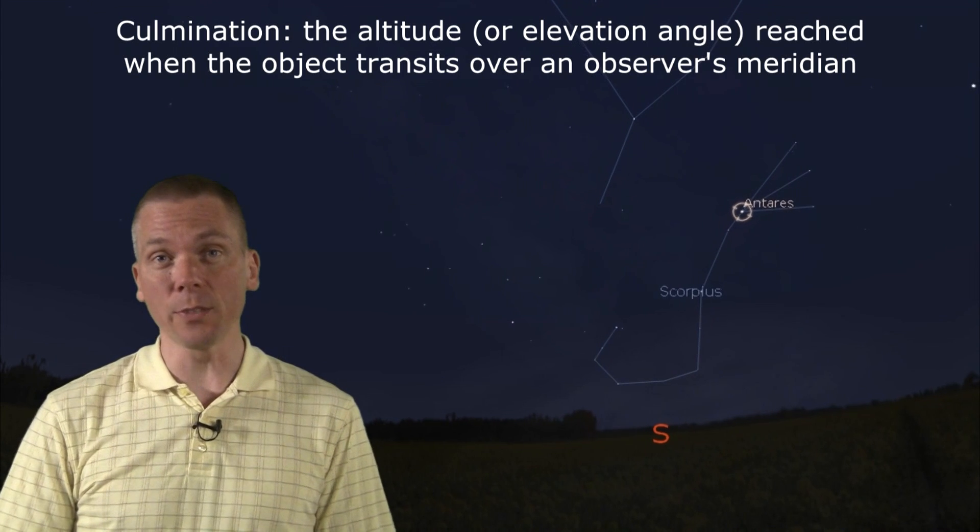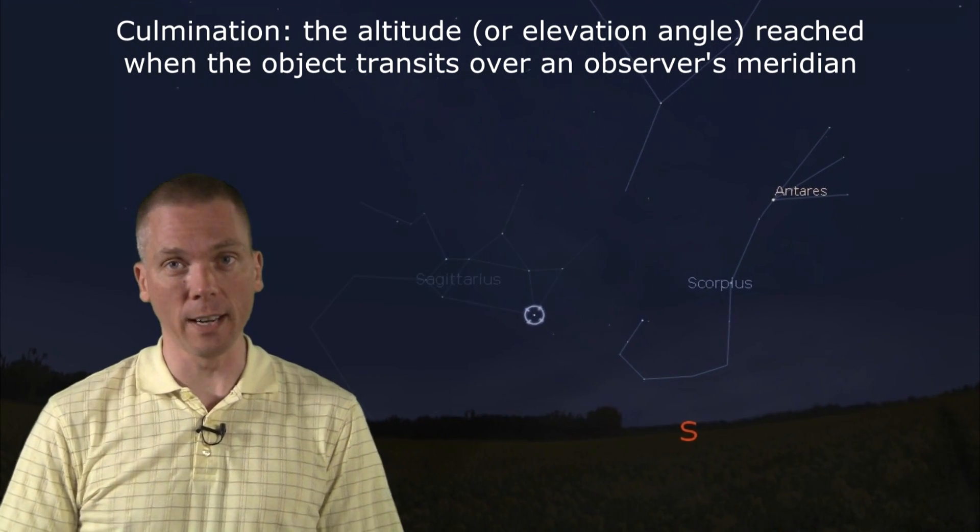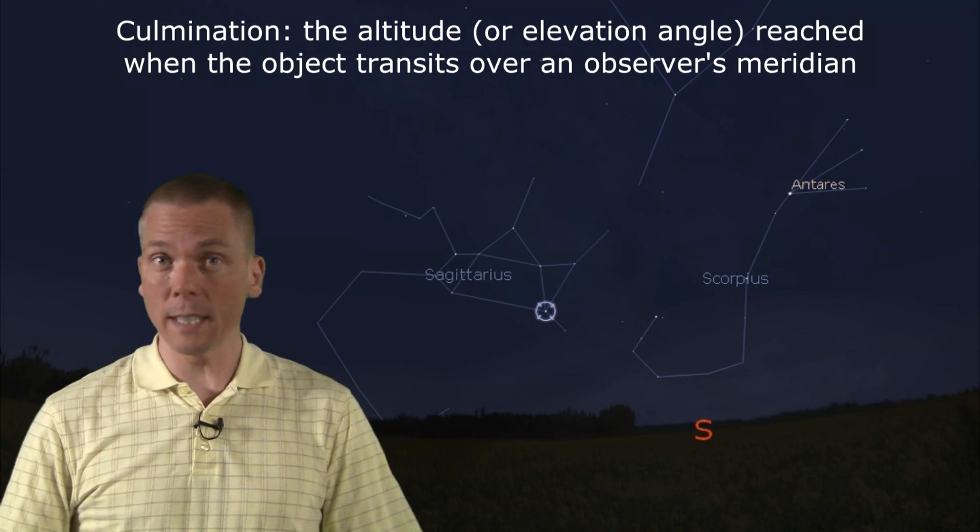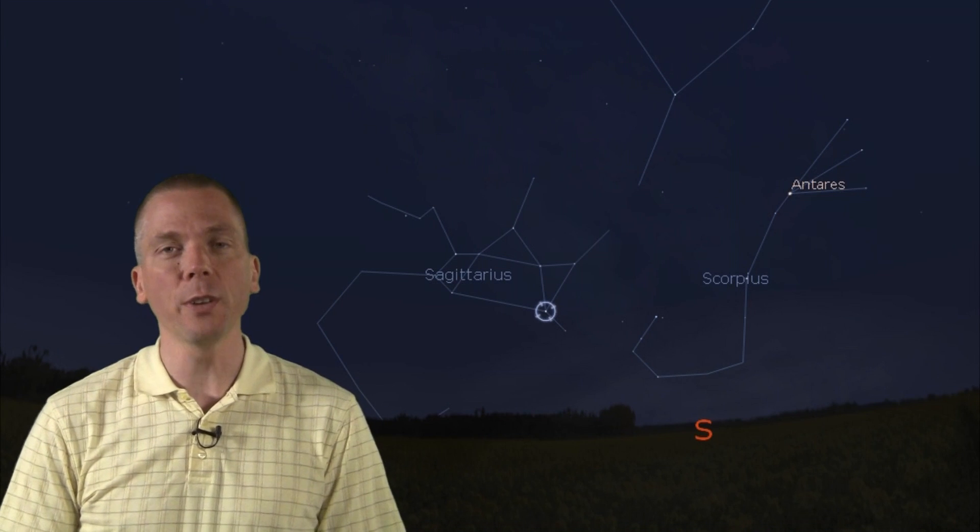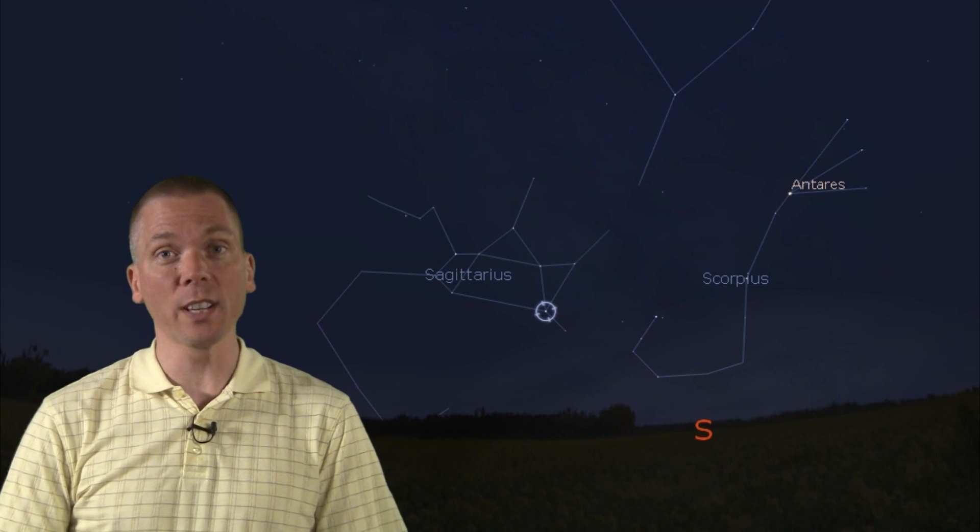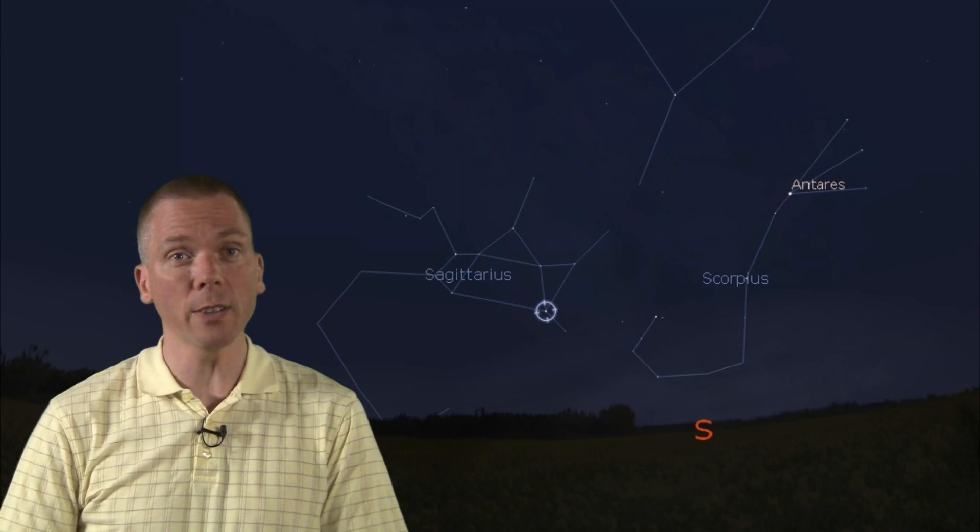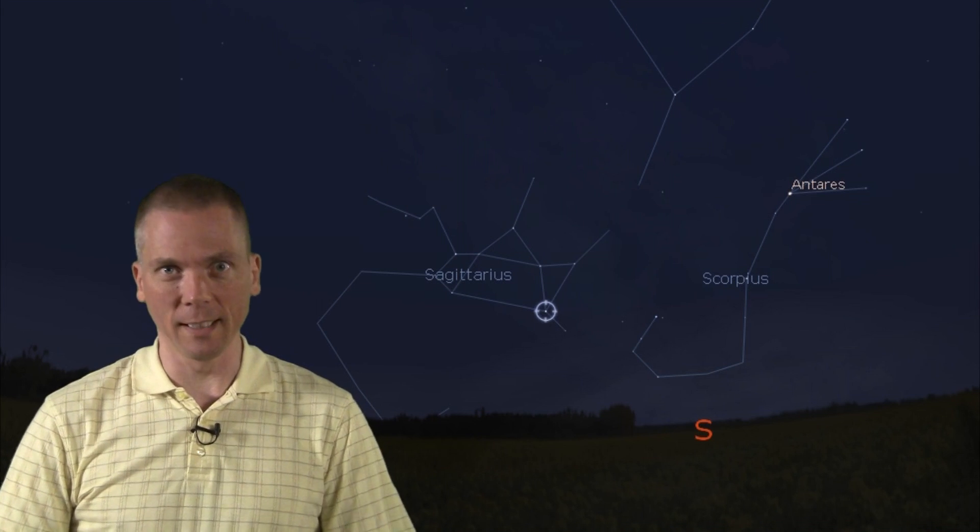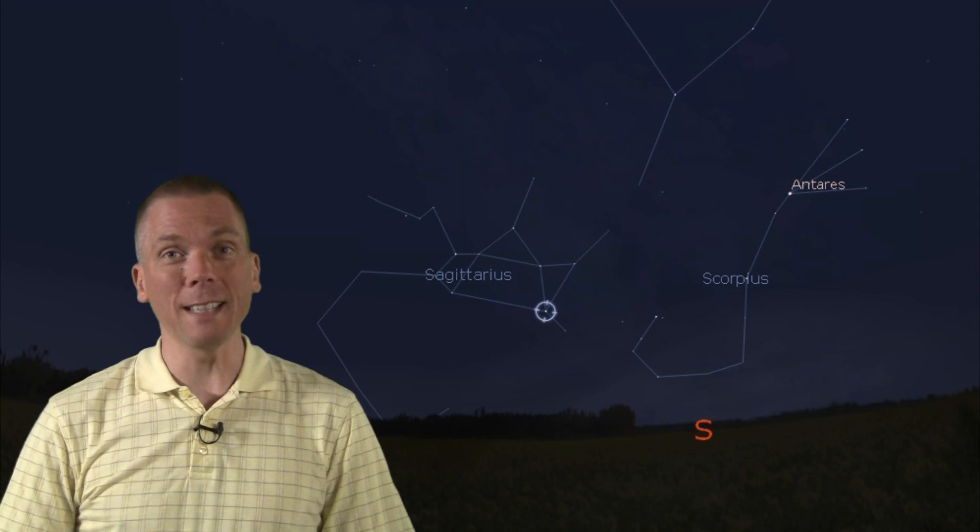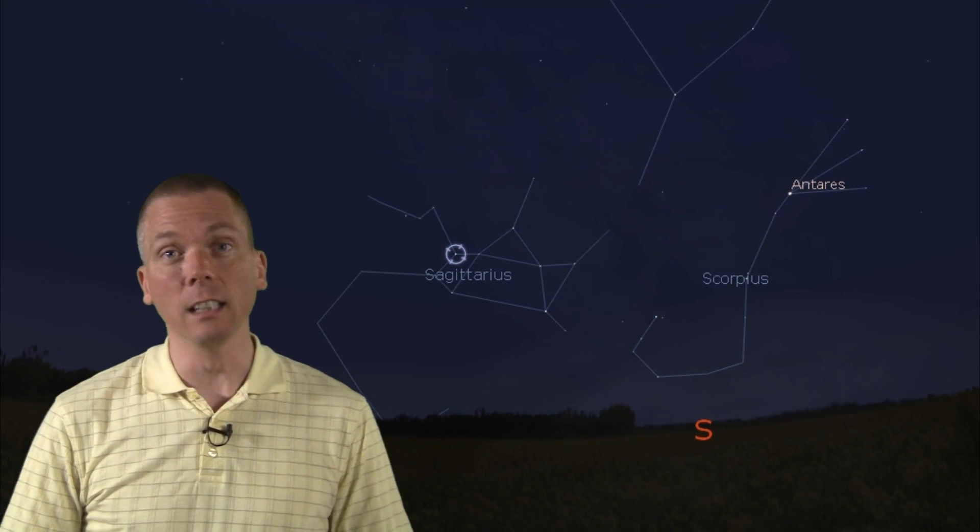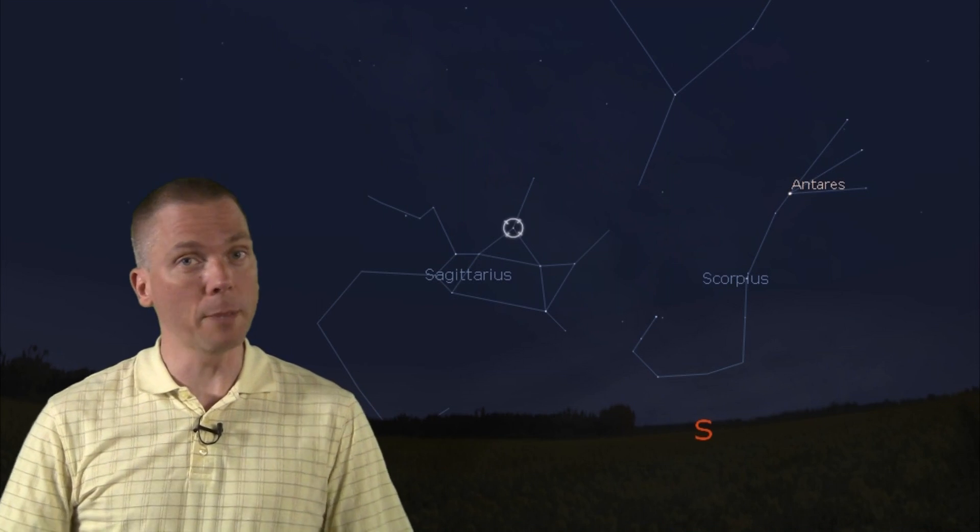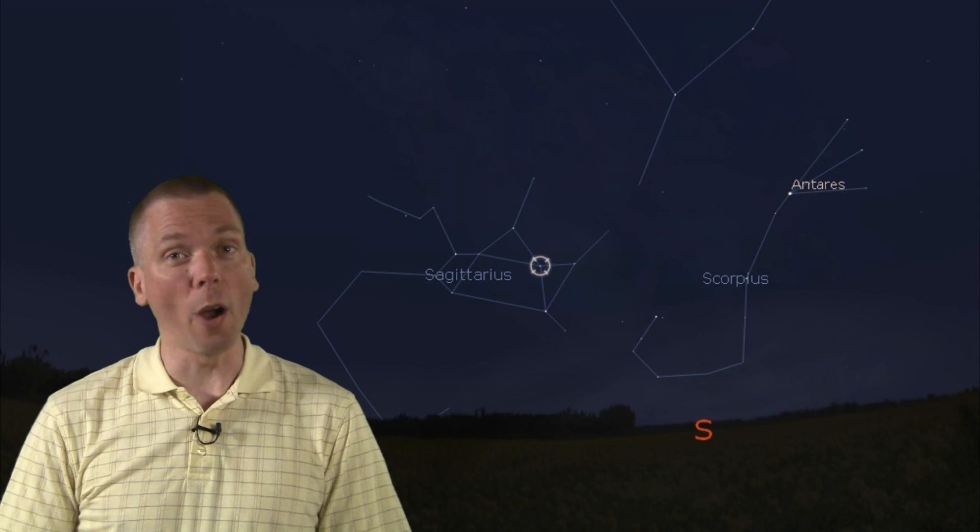To the east of Scorpius is Sagittarius. While its stars are a bit dimmer, only two of them are second magnitude, a careful look for the many stars that are 3.5 magnitude or brighter reveals quite a bit of constellation here. The most prominent shape is that of the teapot. The handle is clearly to the east, the lid a simple triangle up top, and the spout off to the west.